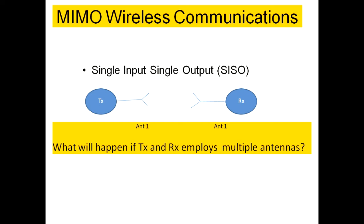The first one is SISO — Single Input Single Output — where we have a single antenna connected to the transmitter and a single receiver antenna connected to the receiver.